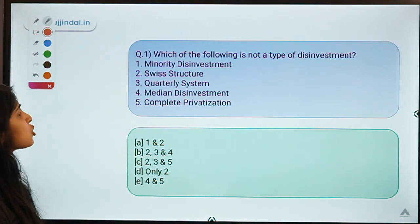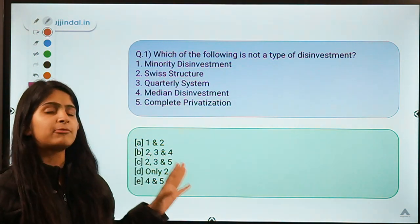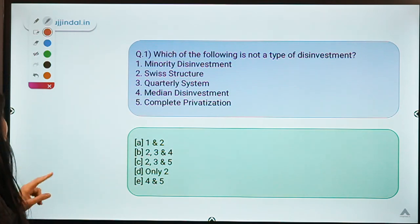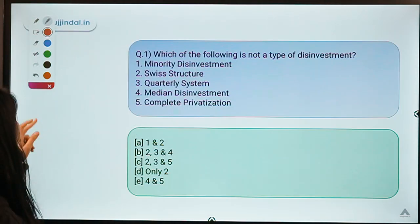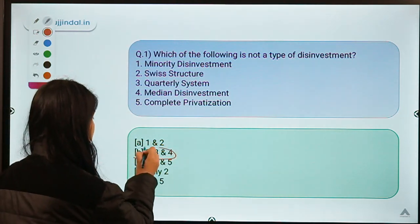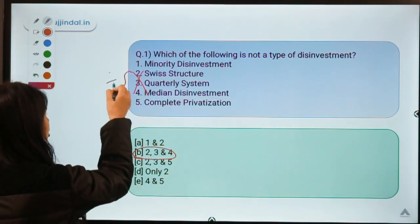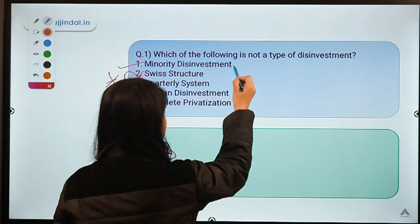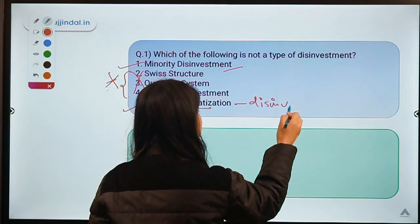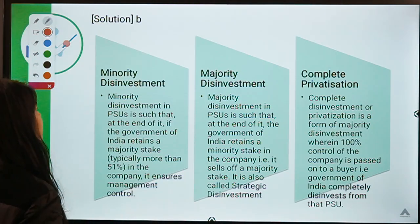Question number one: which of the following is not a type of disinvestment? Five options are given and you have to select the ones which are not a type of disinvestment. The correct option is B, meaning options two, three, and four are not types of disinvestment. Option one and complete privatization (option five) are types of disinvestment.